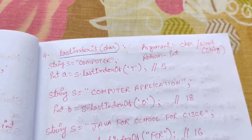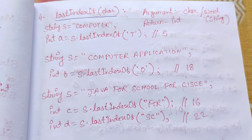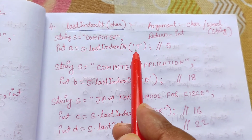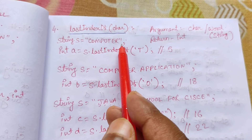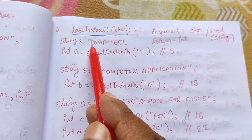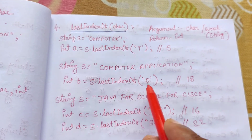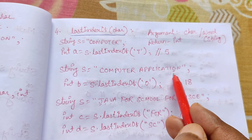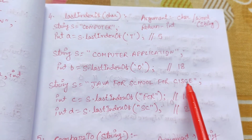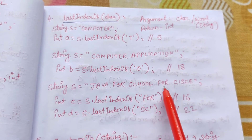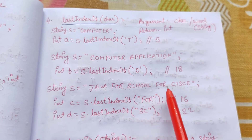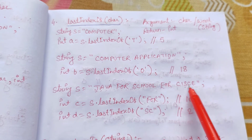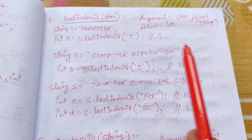Next function is lastIndexOf(). It returns the last index of any character or string. String s = "computer". s.lastIndexOf('t') — the last 't' is at position 5. For s = "computer application", s.lastIndexOf('o') — there is an 'o' earlier but the last one is at position 18. For s = "java for school for icsc", s.lastIndexOf("for") — the last 'for' is at position 16. Similarly, 'sc' appears multiple times but the last occurrence is at position 22.